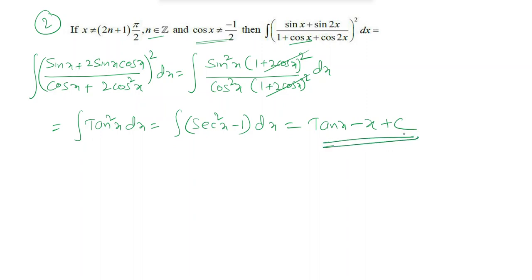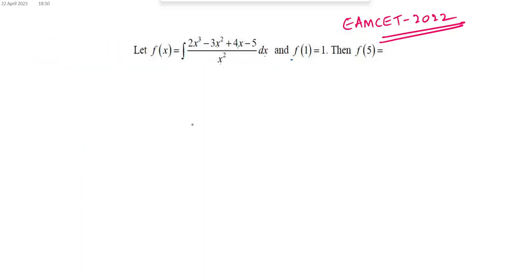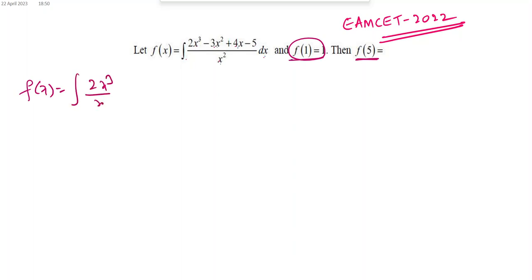This is an MSet 2022 problem. Given f(x) = integration of (2x³ minus 3x² plus 4x minus 5) by x² dx, and f(1) = 1, find f(5). Splitting the fraction: integration of (2x³/x²) minus (3x²/x²) plus (4x/x²) minus (5/x²) dx.